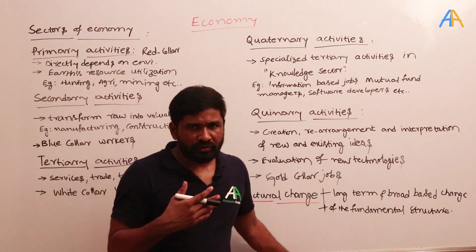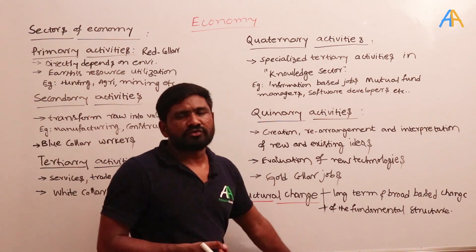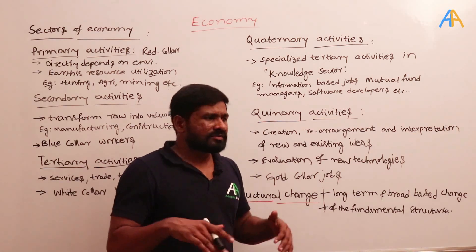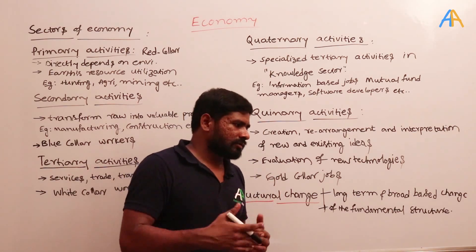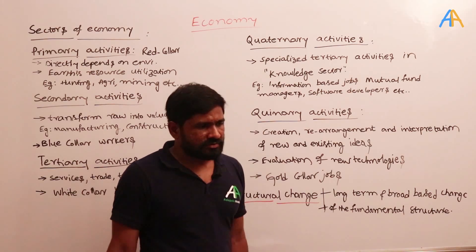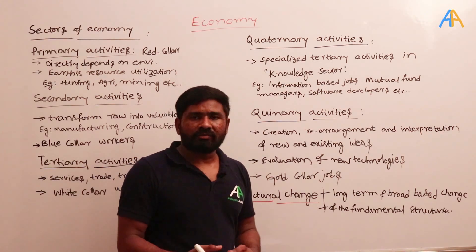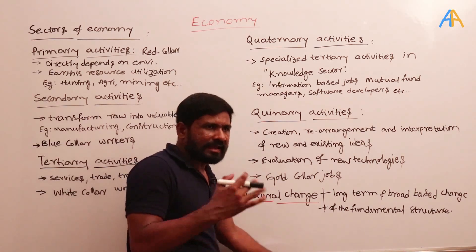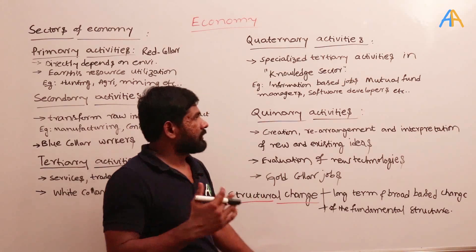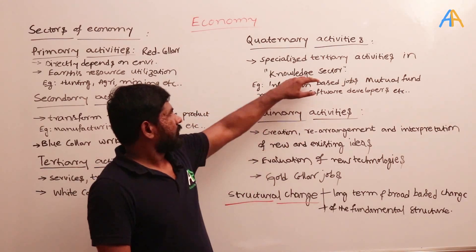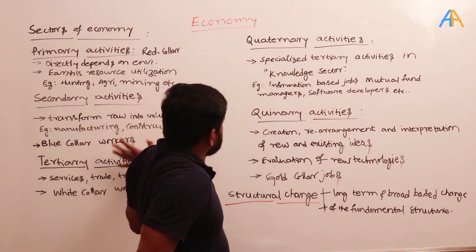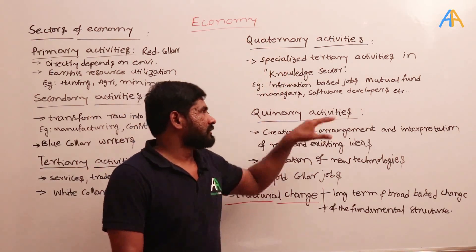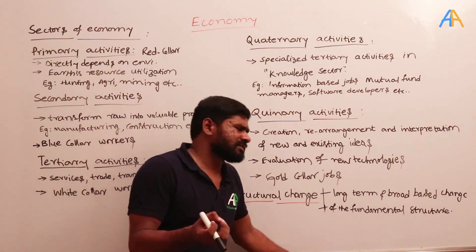Prime Minister Modi promised in his first tenure to reduce unemployment, but it didn't happen because there was not much development in terms of improving the manufacturing sector. They are trying, but it is still lagging behind the target. The knowledge sector within tertiary activities — if it is a specialized knowledge sector — is called quaternary.